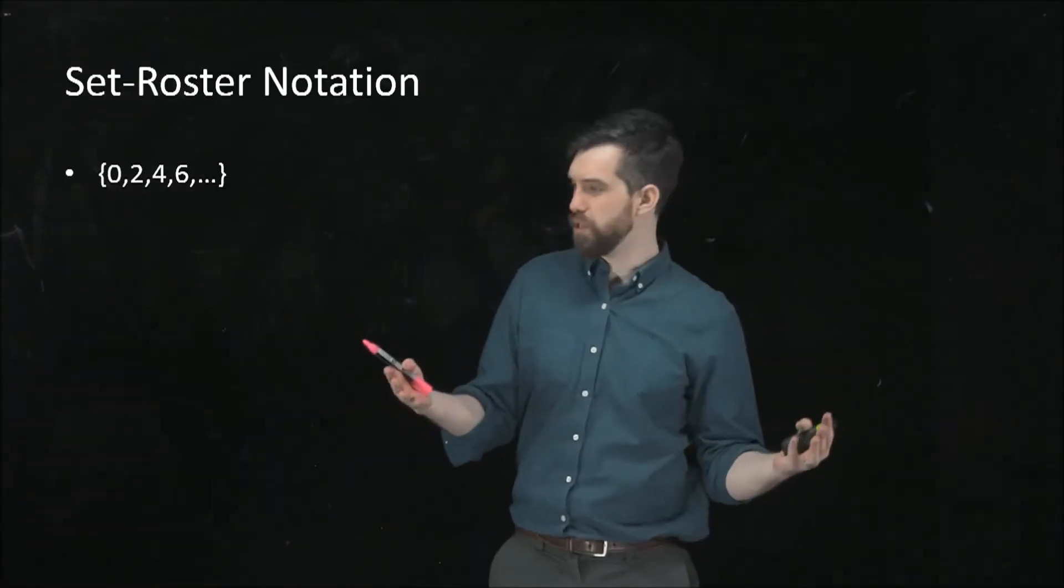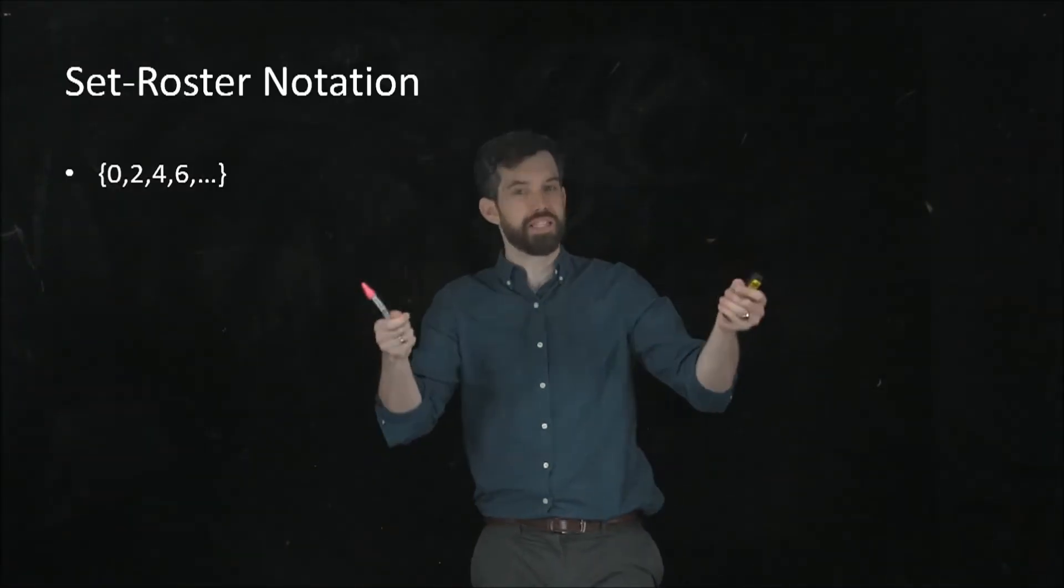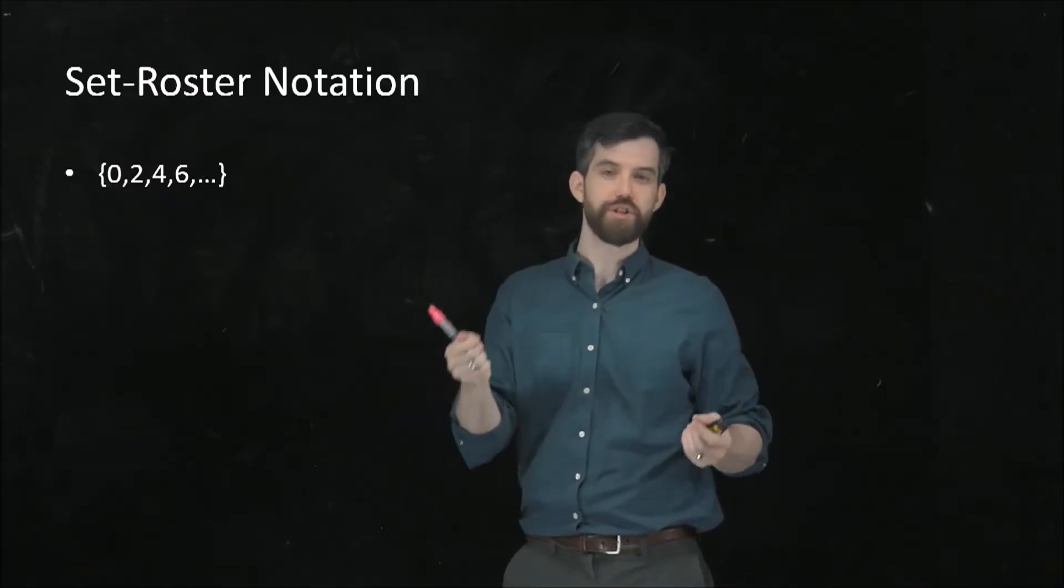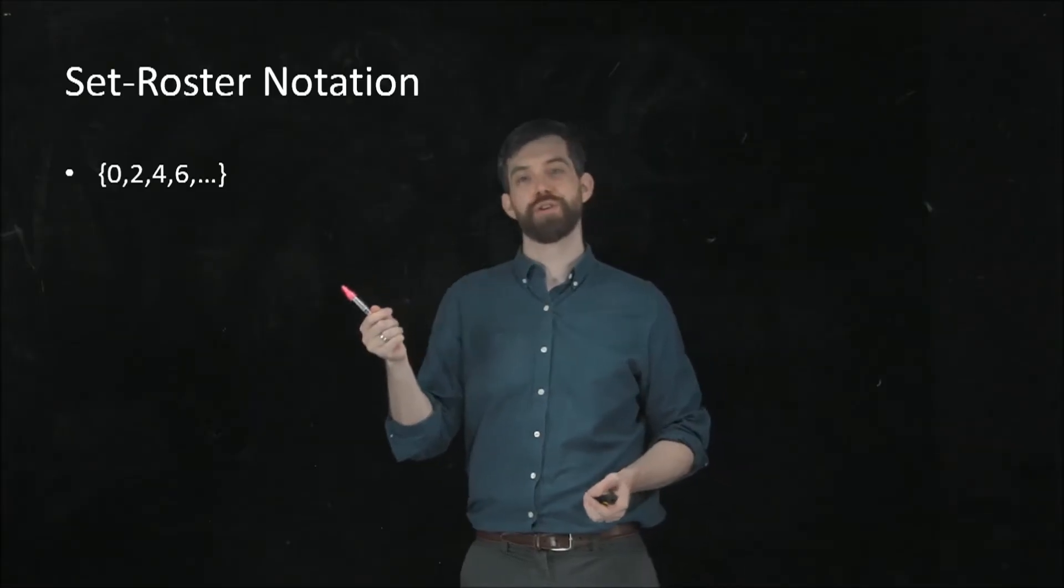This notation that we've been using where I put the squiggly set brackets and I list the elements inside of them is referred to as set roster notation.